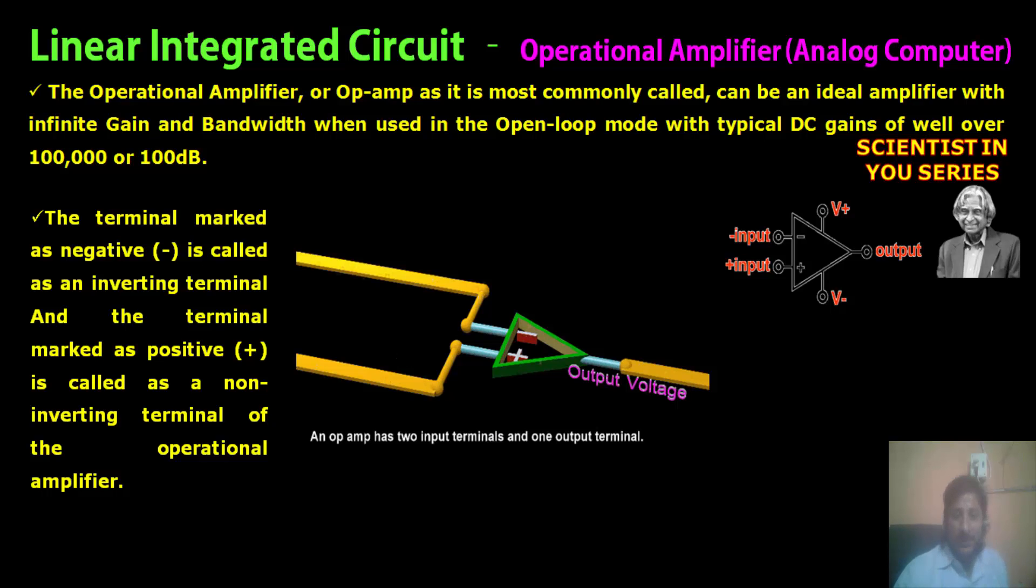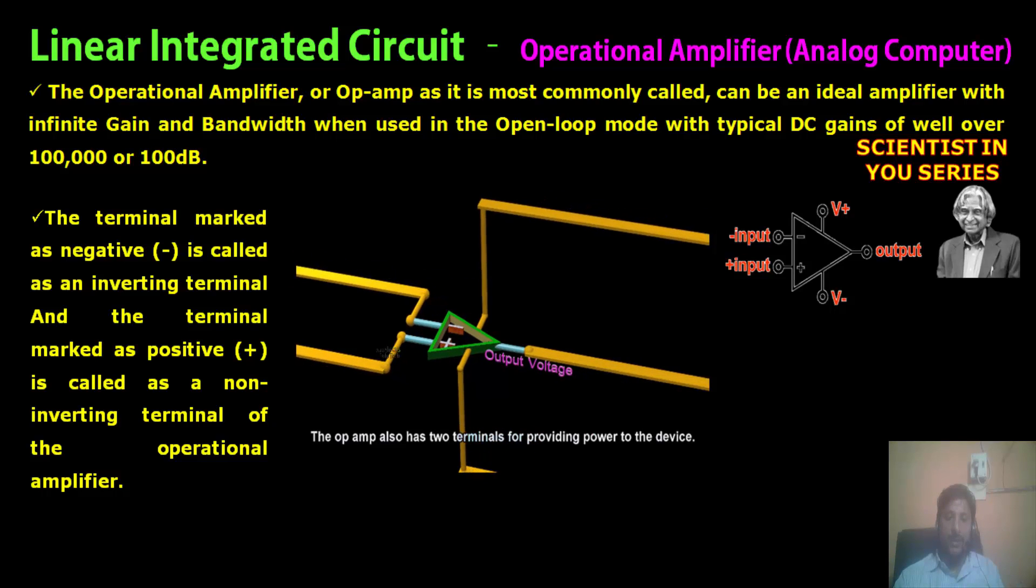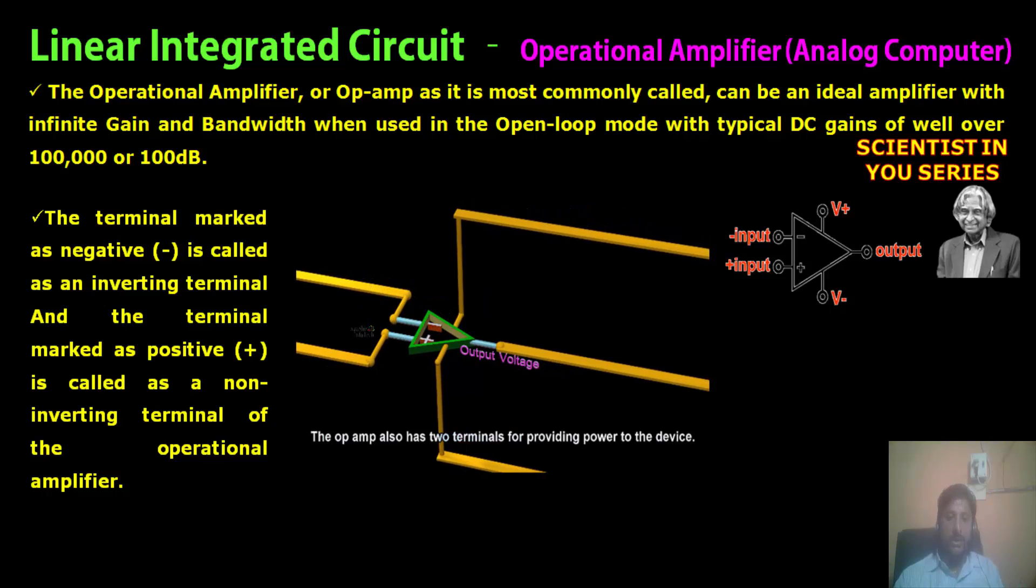Operational amplifier is used to generate or increase the bandwidth or gain of a particular voltage. This is your voltage. It will be amplified to a very huge value. Amplifying the input voltage into a very huge output voltage, that is done by the greatest person, that is operational amplifier.